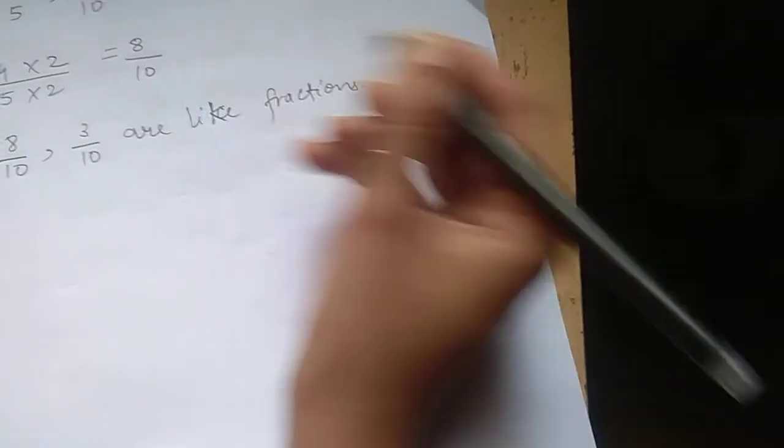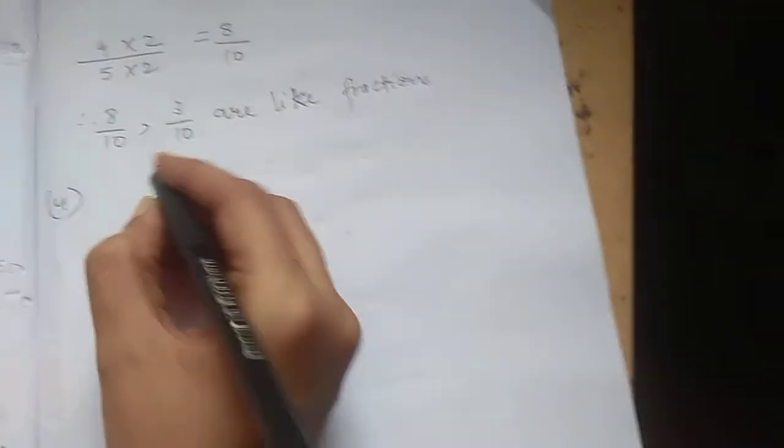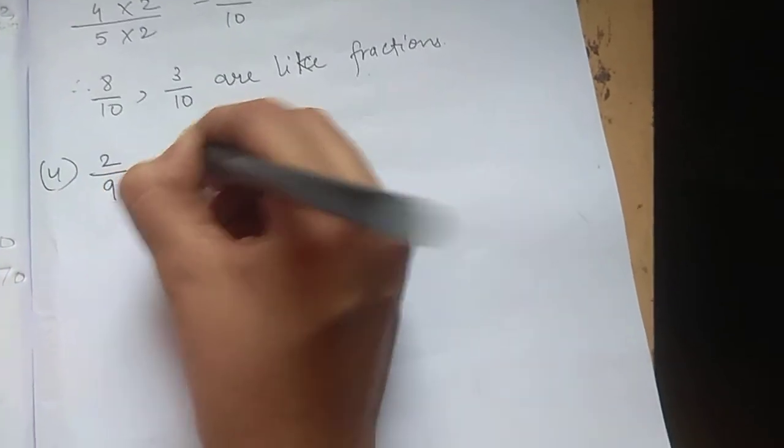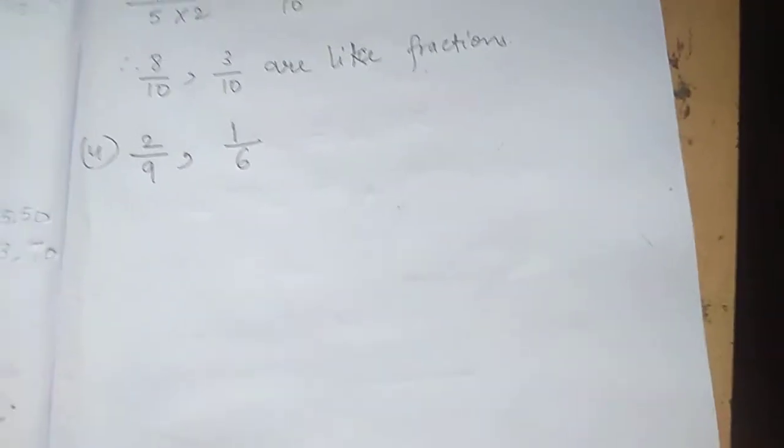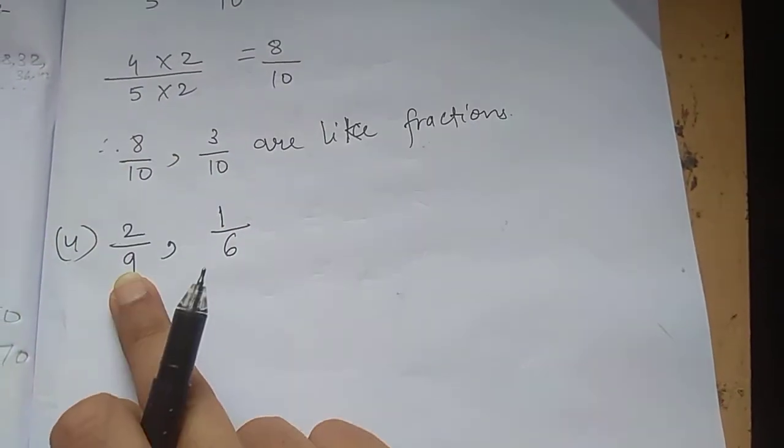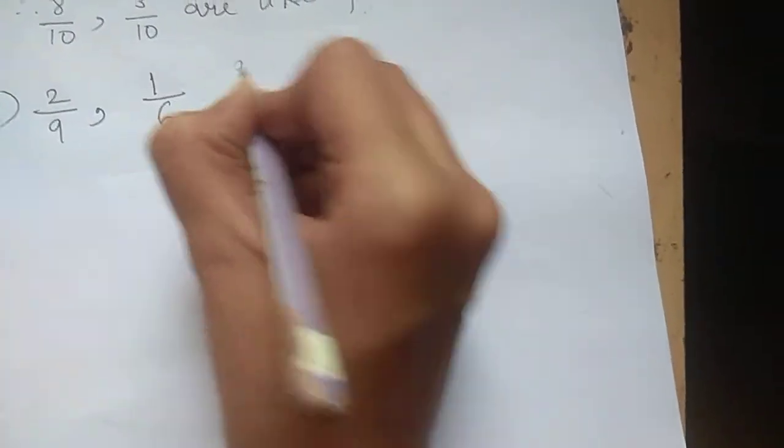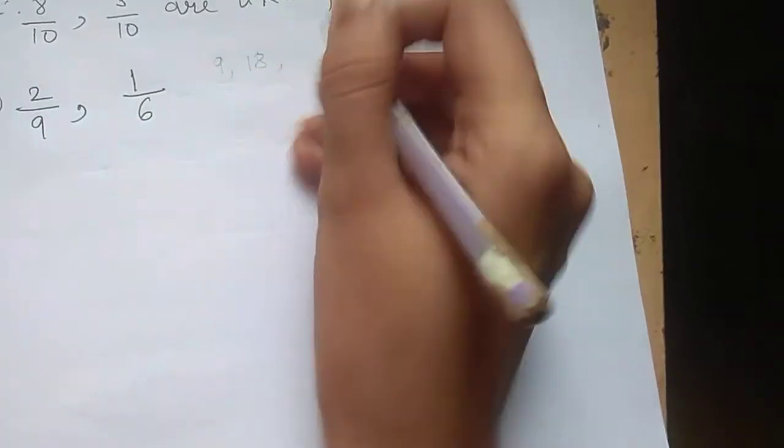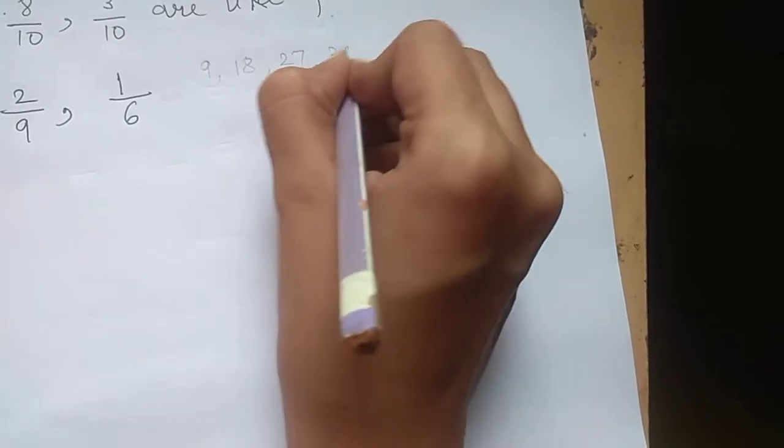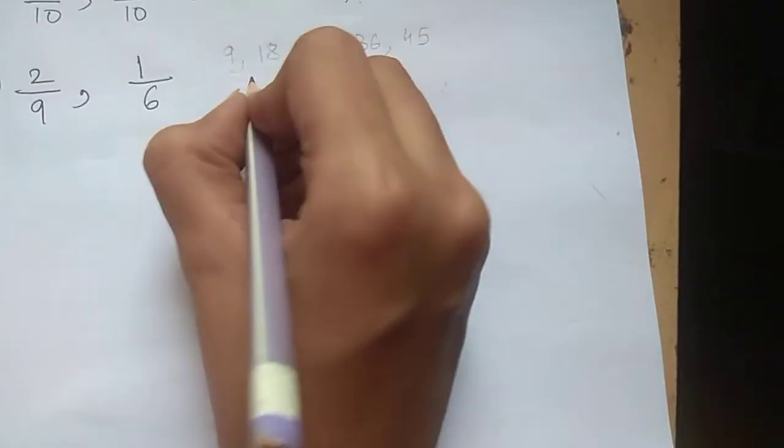Fourth one: 2 by 9 and 1 by 6. So 9 and 6. 9 can't be converted into 6, 6 can't be converted into 9, but 9 and 6 do have a common number in the table. Let's see. 9 1s are 9, 9 2s are 18, 9 3s are 27, 9 4s are 36, 9 5s are 45. Let's see 6: 6 1s are 6, 6 2s are 12, 6 3s are 18.